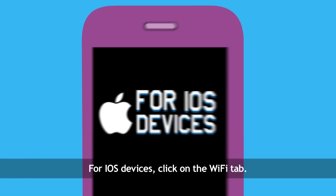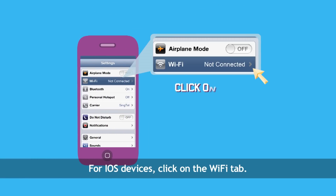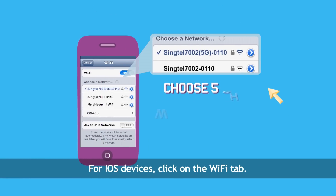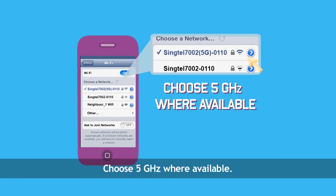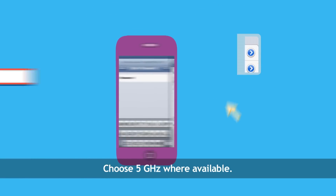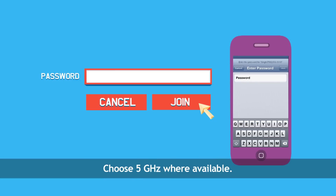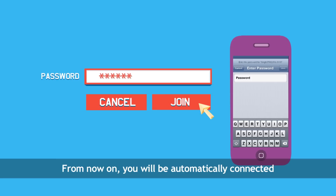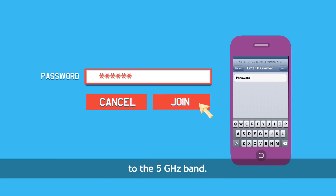For iOS devices, click on the Wi-Fi tab. Choose 5GHz where available. Enter your network key or password. From now on, you will be automatically connected to the 5GHz band.